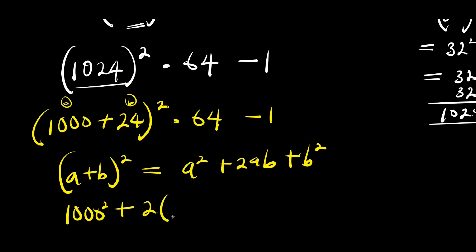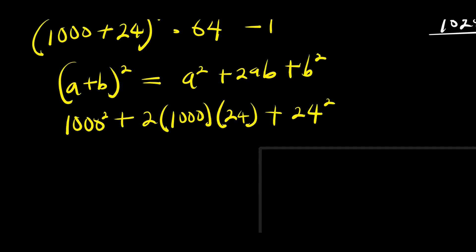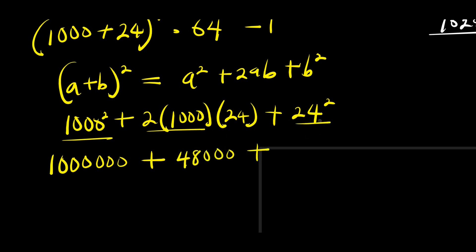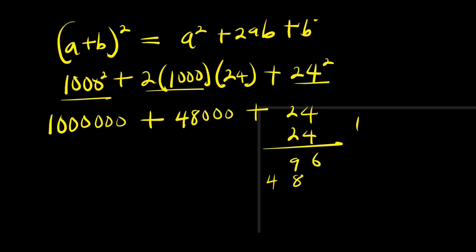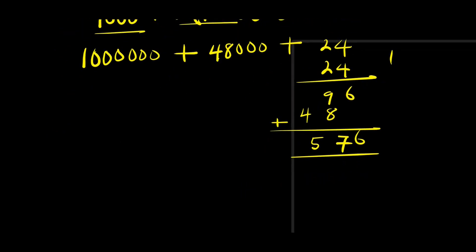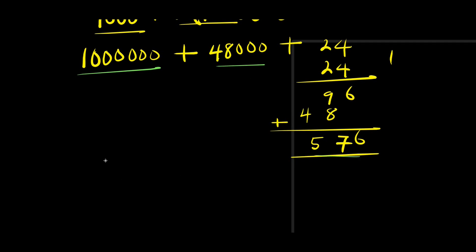So we compute: 1000 squared plus 2 times 1000 times 24, plus 24 times 24. That is 1,000,000 plus — 2000 times 24 is 48,000 — plus 576. Adding these together: 1,000,000 plus 48,000 plus 576.